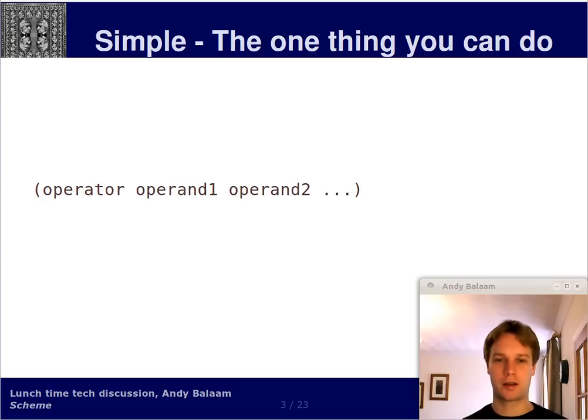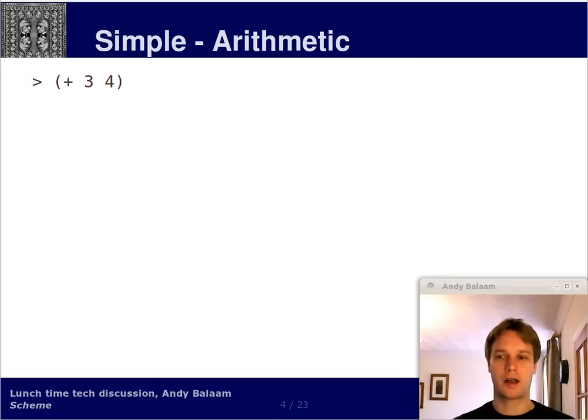So, let's start with the one thing you can do. Basically, you can have a bracket, and then a word, and then space, and a bunch of other words, and a closed bracket. The first word is considered to be the operator, which is like the command or the function name. And the other things are called operands, which are just like arguments to the function.